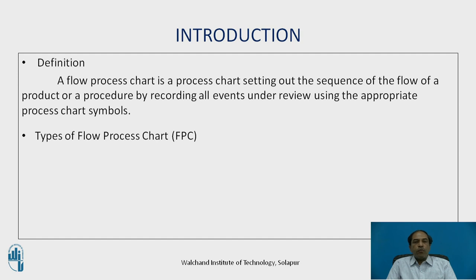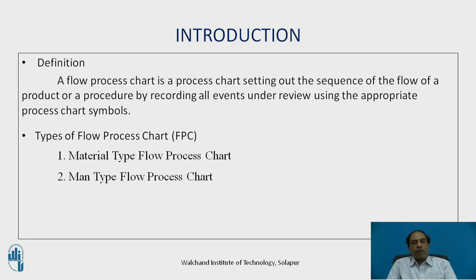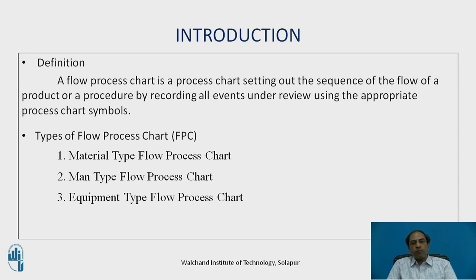There are a variety of flow process charts. The first one is the material type flow process chart, indicating the flow of material from one place to another. There is the man type flow process chart, indicating the movement of a person from various workstations to the end of the process. The third is the equipment type flow process chart, which tracks the movement of equipment from one place to another.